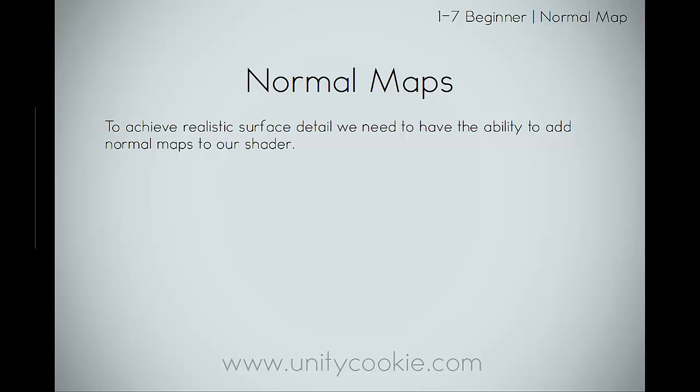To achieve a realistic surface detail, we need to have the ability to add normal maps to our shader. I'm going to assume that you know what normal maps are and have a general understanding of how they are used. We're going to be covering how they work in shaders and how they react to your lighting. If you are unfamiliar with normal maps, you can jump over to Wikipedia — there are some great descriptions there. You can also leave a comment on unitycookie.com and I will do my best to help you out.